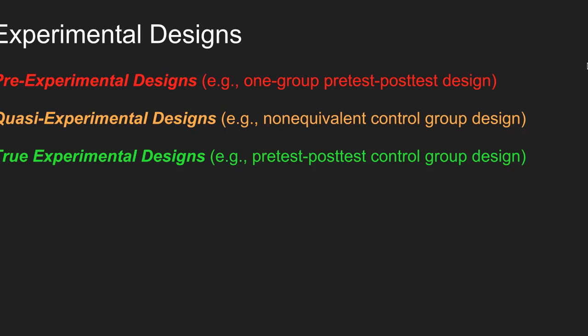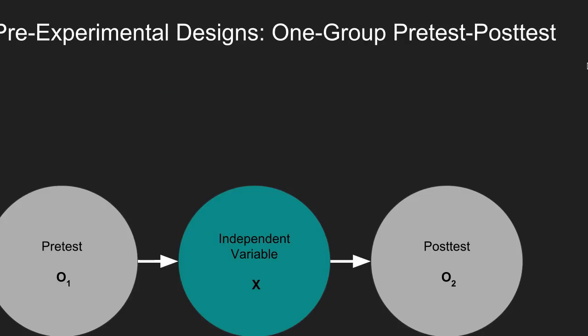We'll talk about an example of each of these three experimental designs. For the pre-experimental design, we'll discuss the one-group pre-test post-test, or single group pre-test post-test. For quasi-experimental designs, we'll cover the non-equivalent control group. For true experimental designs, we'll discuss the pre-test post-test control group design.